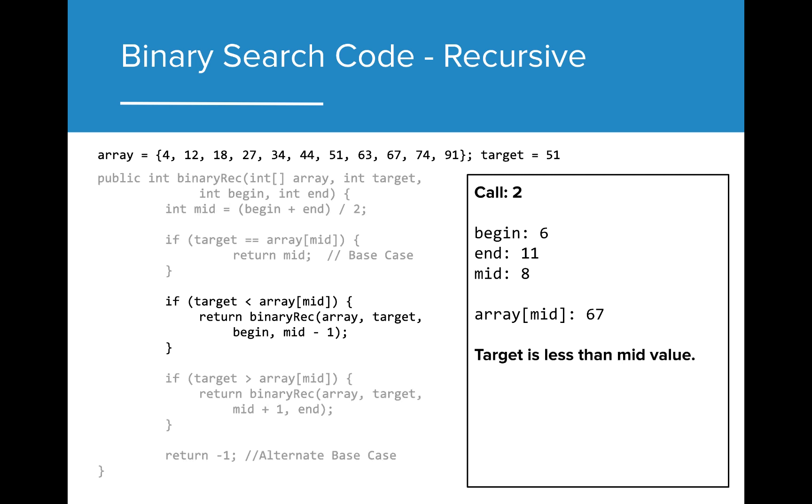The second call passes the 6 and 11 directly. We then calculate our midpoint and test the values again. On this second pass, our midpoint value is less than our target, so we make a third recursive call, adjusting the endpoint this time.